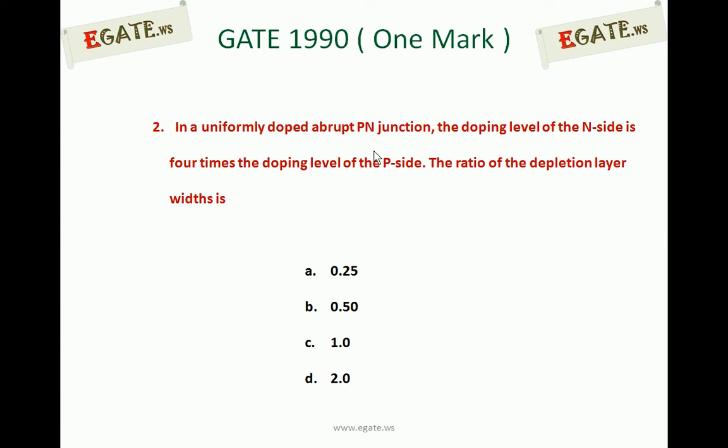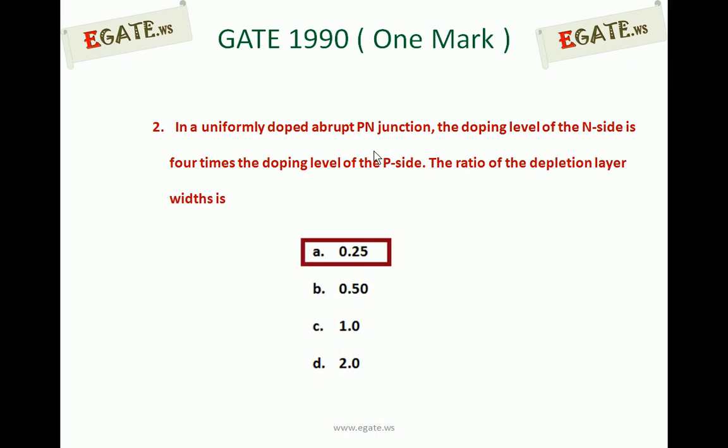For a uniformly doped abrupt PN junction, the doping level of the N side is 4 times more than the P side. The question asks for the ratio of the width on the N side compared to the P side. The correct answer for this question is 0.25. We will see the details now.